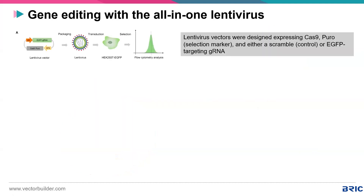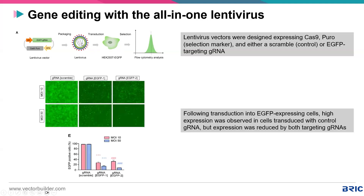Here is an example of gene editing with an all-in-one lentivirus containing gRNA targeting GFP and Cas9, packaged into lentivirus and used to infect GFP-expressing cells. Similar to other methods, controls show high GFP expression while gRNA 1 and gRNA 2 conditions show low GFP expression, indicating successful delivery and function.